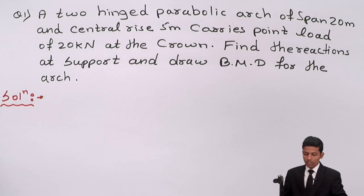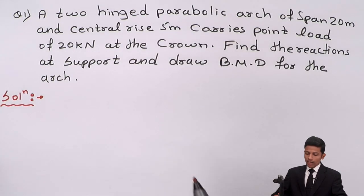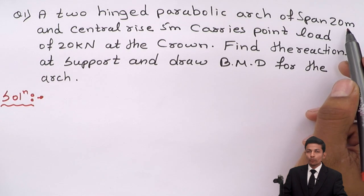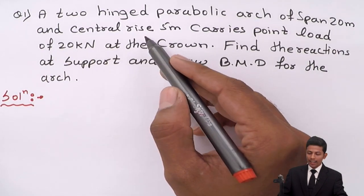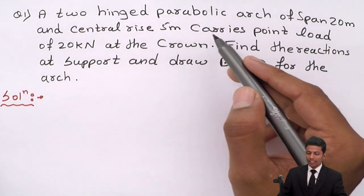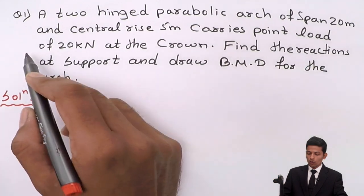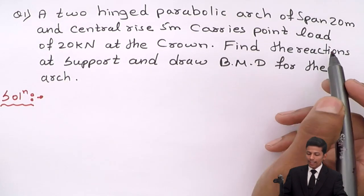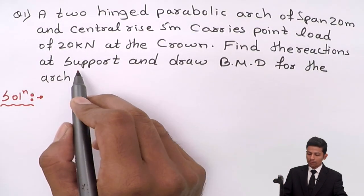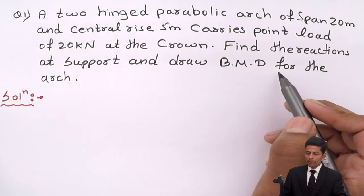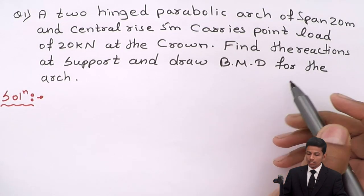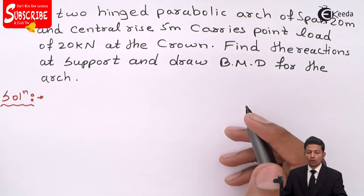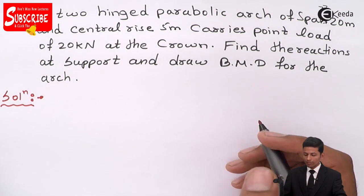This is the question given to us. A 2-hinged parabolic arch of span 20 meters and central rise 5 meters carries a point load of 20 kN at the crown. Find the reaction at support and draw the bending moment diagram for the arch. In this question, no diagram is given, so we have to draw the diagram first.